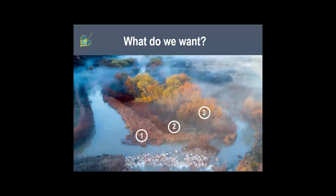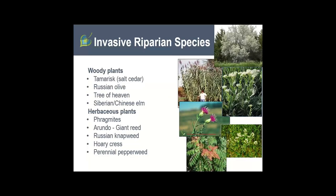We want a stratified riparian area with grasses and forbs, understory shrubs, and overstory trees — a diverse riparian area that can serve the many purposes we rely on our rivers for. Invasive riparian species tend to be the name of the game. We have many of them — invasive woody plants, herbaceous plants — not only in riparian areas but all over. These are some of the problem species we want to address.